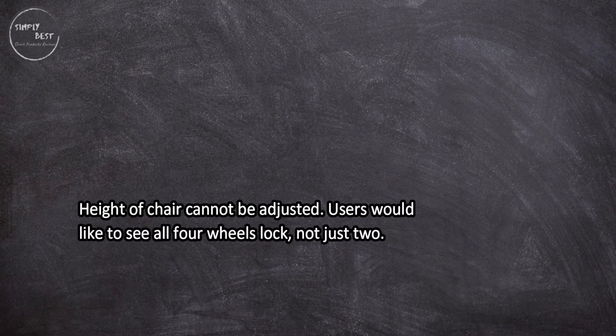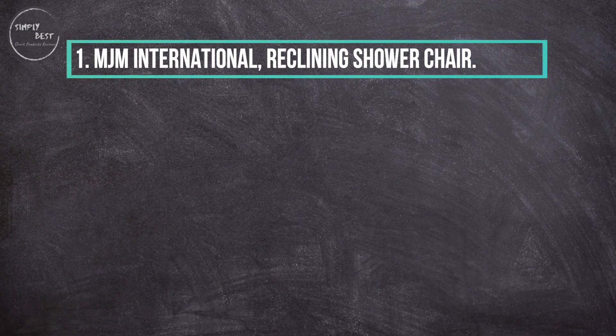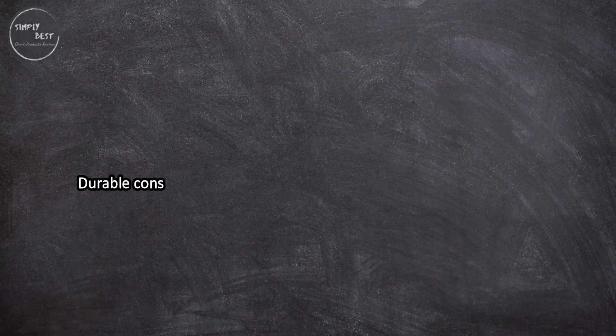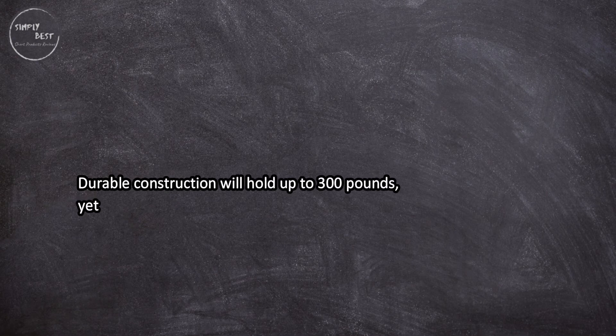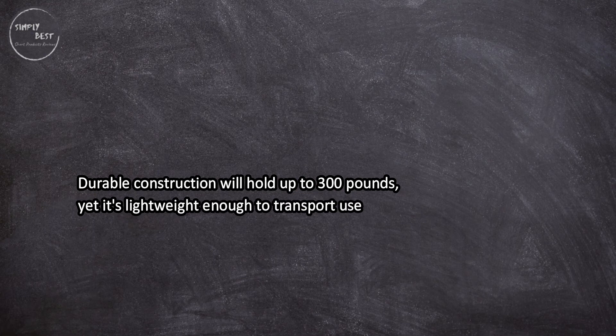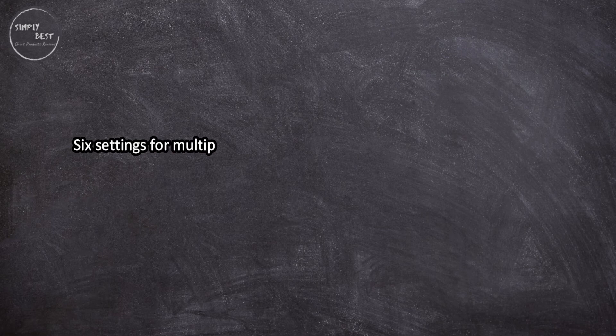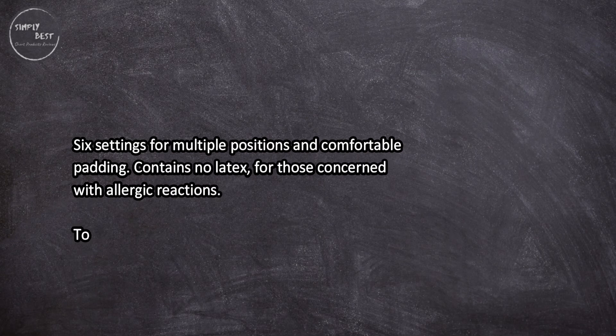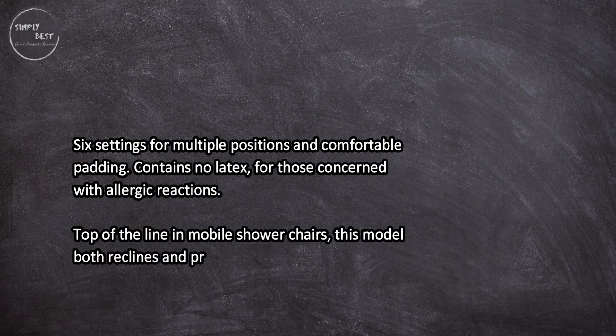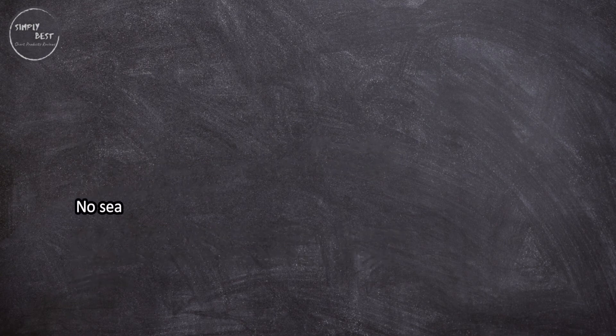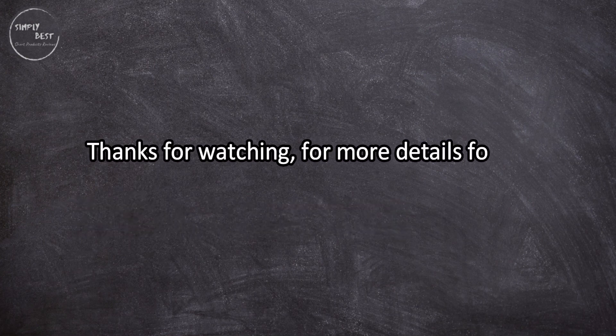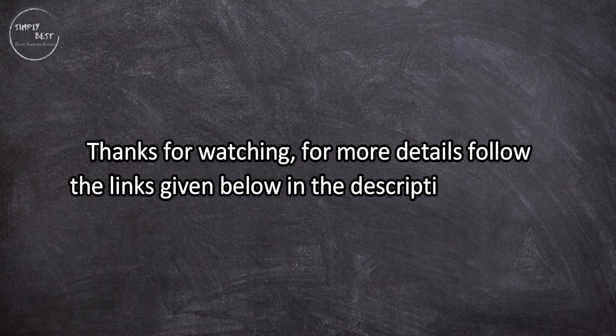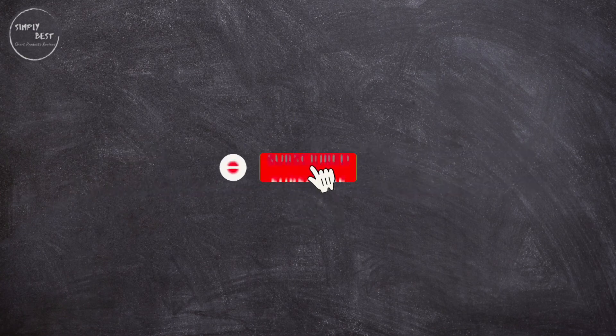At number one, MJM International Reclining Shower Chair. Durable construction will hold up to 300 pounds, yet it's lightweight enough to transport users easily. Easy to assemble, with six settings for multiple positions and comfortable padding that contains no latex for those concerned with allergic reactions. Top of the line in mobile shower chairs, this model both reclines and provides leg elevation for extra comfort. However, no seat belt to hold user in place, will not fit into standard bathtubs, and is designed for shower use only.